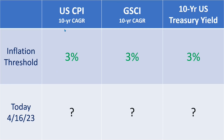The three measurements are: the U.S. CPI's compound annual growth rate should be 3% or lower; the Goldman Sachs Commodity Index — the most important measurement of all three — should be 3% or lower; and the 10-year yield of the U.S. Treasury note should be 3% or lower. If all three are above 3%, then inflation is higher than optimal, and money printing should be paused until some of these three are below 3% again.